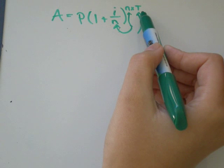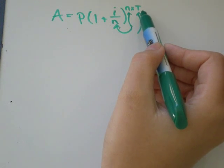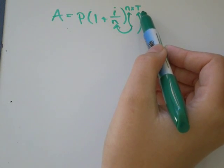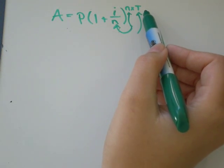t is equal to the number of years your money is in the bank. So if it's in the bank for 25 years, t would just be 25.